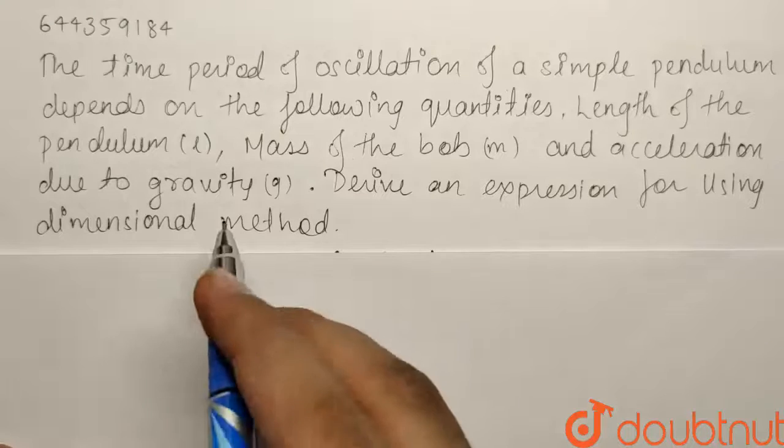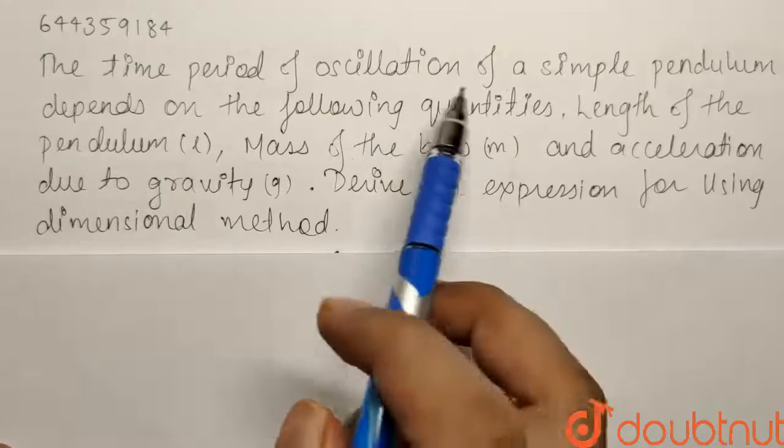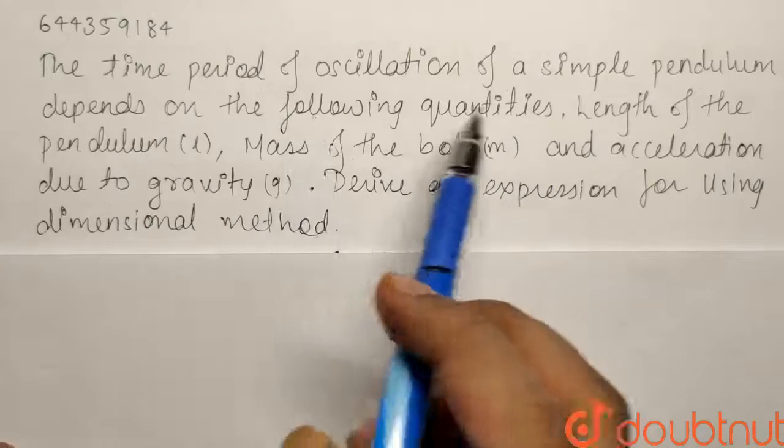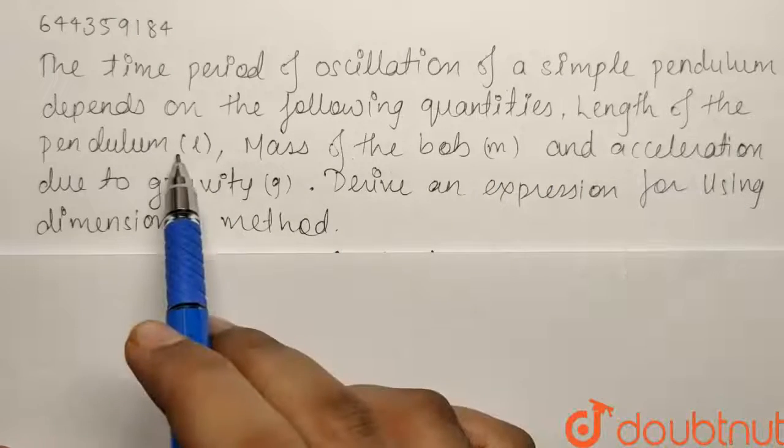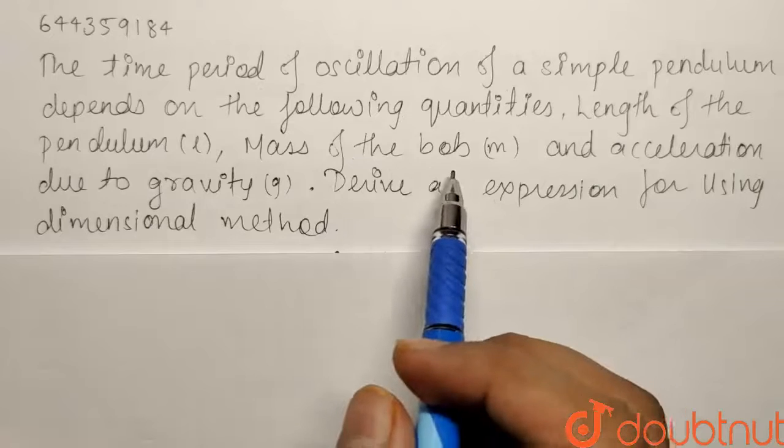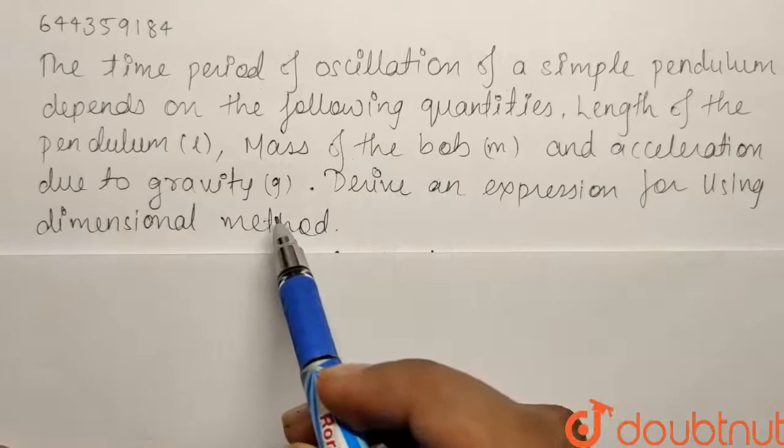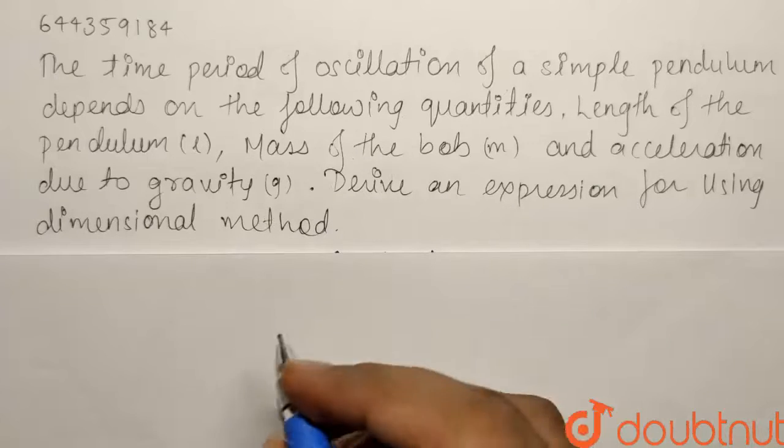So here we have a question from dimension analysis. The time period of oscillation of a simple pendulum depends on the following quantities: length of the pendulum (L), mass of the bob (m), and acceleration due to gravity (g). We have to derive an expression using dimension method.